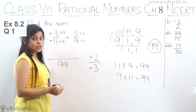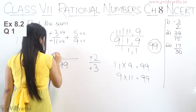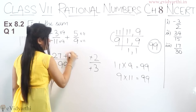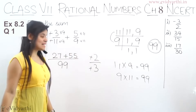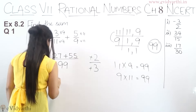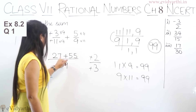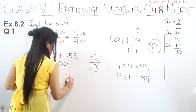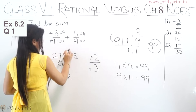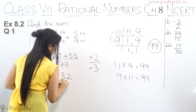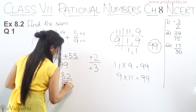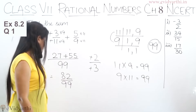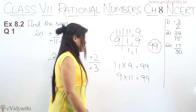So we have 27 plus 55 upon 99. Adding: 7 plus 5 is 12, carry 1; 2 plus 5 plus 1 is 8. Wait — we get 82 upon 99. You might wonder if this simplifies further — I don't think so. So we can leave the answer as 82 upon 99. You could also convert it to a mixed fraction, but it's not necessary; you can leave it here.